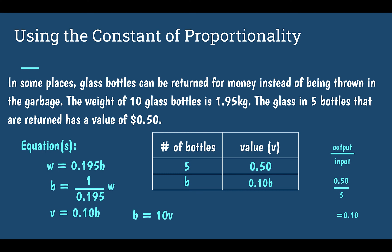But 1 divided by one-tenth does come out to 10. So B is equal to 10 times the value. We can use that as our equation: B equals 10V.